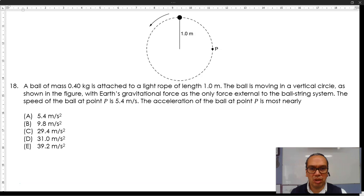with Earth's gravitational force as the only force external to the ball-string system. The speed of the ball at point P is 5.4 m per second. The acceleration of the ball at point P is most nearly.